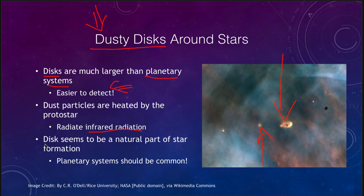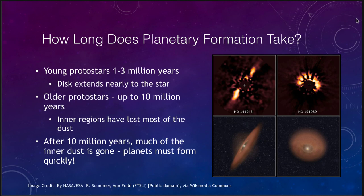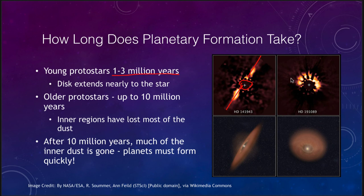When we look at star-forming regions, the disk seems to be a natural part of star formation, meaning that there should be lots of planetary systems out there. We can see examples here where the star has been blocked out at the center and we can see the dusty disk around it. It's all a matter of the orientation with which we see them. Here we're looking at one close to edge-on and you can see the disk runs diagonally. Here we're tilted a little bit more, looking at it more face-on. We do have to block out the star because it is emitting far more light than the disk itself.